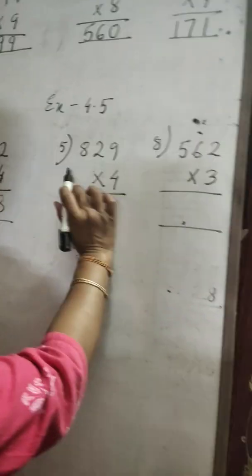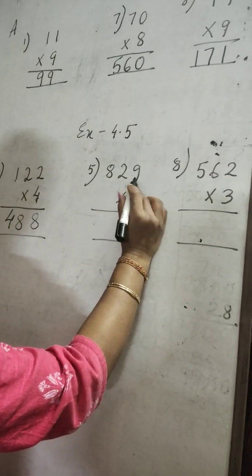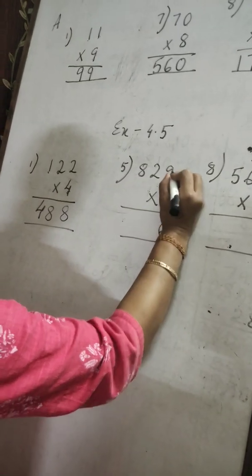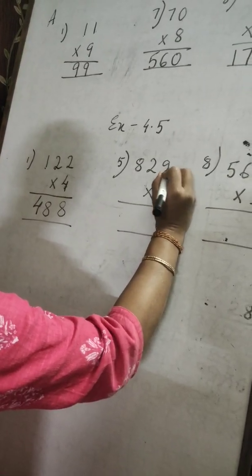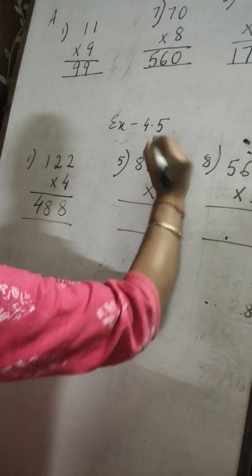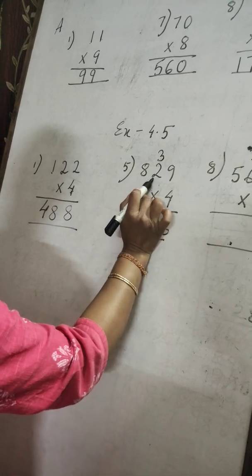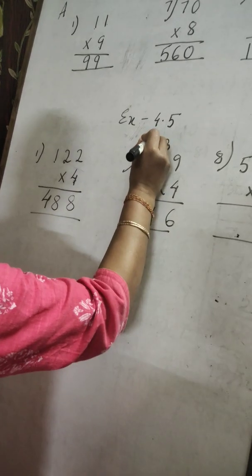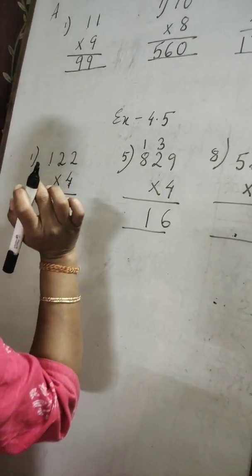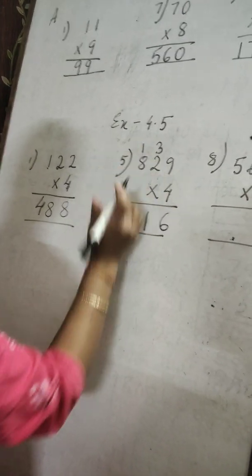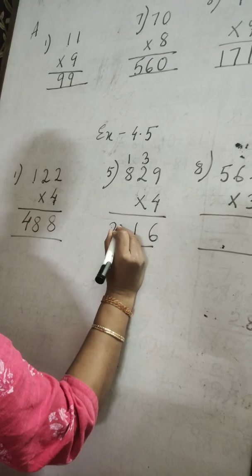Next example: 4 nines are 36 — I am multiplying the digit with the number in the ones place. Write 6 and carry 3. 4 twos are 8 plus 3 is 11 — write 1 and carry 1. Then multiply with the hundreds place: 4 eights are 32 plus 1 is 33. Another example: 3 twos are 6. Now 3 multiplies with the tens place — 3 sixes are 18, carry 1. Then 3 fives are 15 plus 1 is 16.